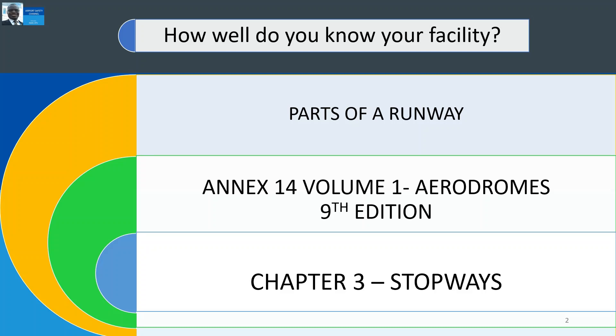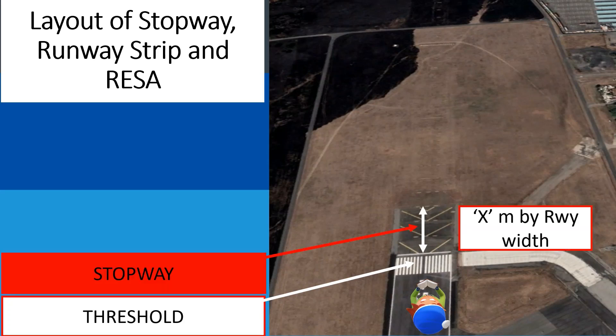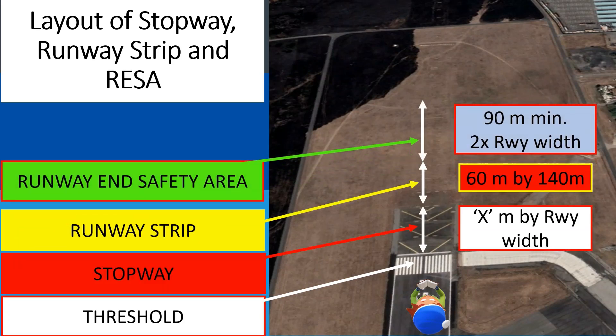Hello, welcome to the Airport Safety Channel. I am your host Isaac Otu, and it is a privilege to take you through today's presentation: how well do you know your airport facility? Parts of a runway — we are using Annex 14 Volume 1, Aerodromes, the ninth edition, currently in Chapter 3, focusing on stopways. We have previously looked at the layout of a runway strip and RESA. Today's topic is: what is the stopway?